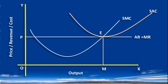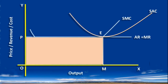Average revenue is equal to average cost, so the firm is earning normal profit. The condition for normal profit — average revenue equal to average cost — is satisfied at this point. Profit is the difference between total revenue and total cost. Average revenue times quantity, i.e. OP multiplied by OM, is the total revenue. In the graph, OPEM is the total revenue.